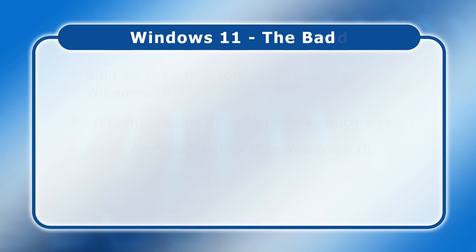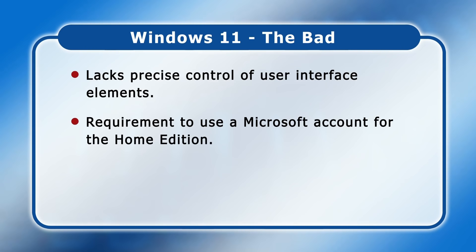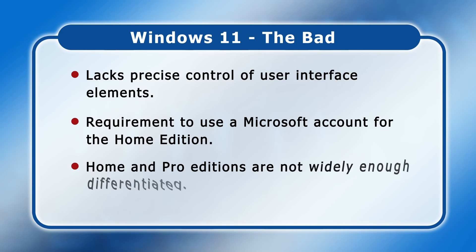Over on the dark side: like Windows 10 and Windows 8 before it, Windows 11 lacks the precise control of user interface elements that disappeared after Windows 7 but can still be found in some Linux distros. The requirement to use a Microsoft account for the Home edition is also not good news, as it continues taking us down the path of an operating system being a service rather than a basic utility. The Home and Pro or Business editions of Windows 11 are also not widely enough differentiated, with both trying to be all things to all users.